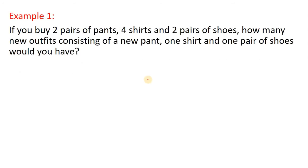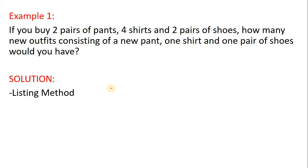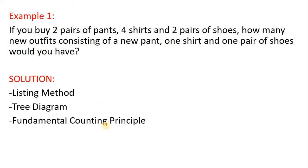Let's look at example number one. If you buy two pairs of pants, four shirts, and two pairs of shoes, how many new outfits consisting of one pant, one shirt, and one pair of shoes would you have? I'll be presenting the listing method, tree diagram, and the fundamental counting principle.